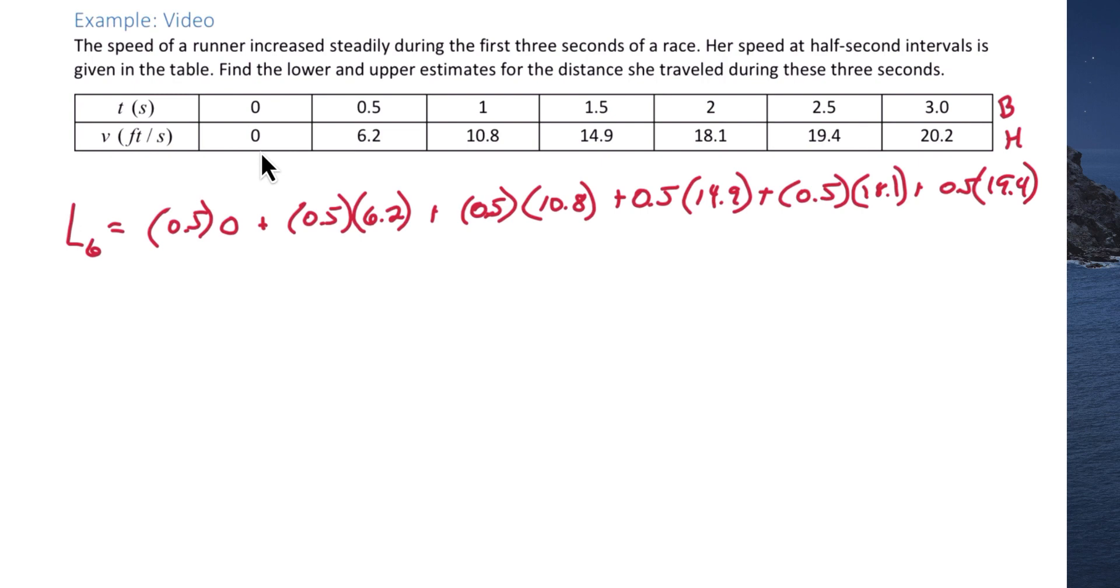Now we don't include the last time interval because we're looking at left-hand endpoints. That's going to not include the far-right endpoints. So if we sum all of this up in the calculator, we get 34.7 feet. So this is the approximate distance traveled using left-hand endpoints.